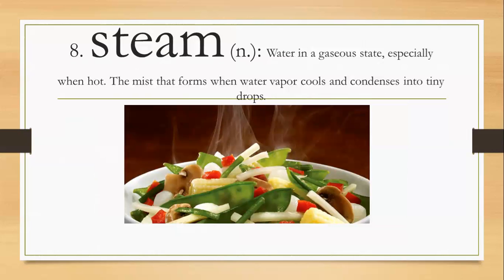Number 8. Steam, S-T-E-A-M. It's a noun meaning water in a gaseous state, especially when hot, the mist that forms when water vapor cools and condenses into tiny drops. Look at that food. We can tell by the little steam that goes from the food that it's hot. If we boil water or your mom boils water to cook pasta, you might see when she opens the top of the pan it comes like a big fog thing. That is steam, it's heat. The steam forms little droplets of water because of condensation.